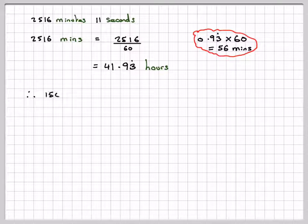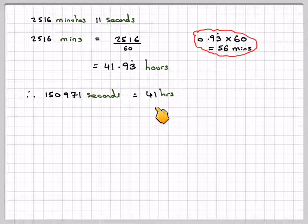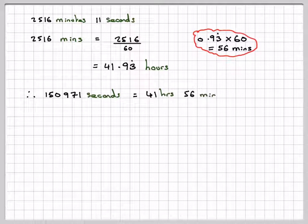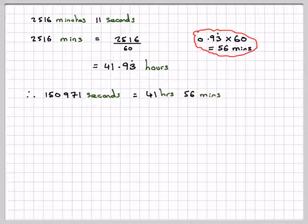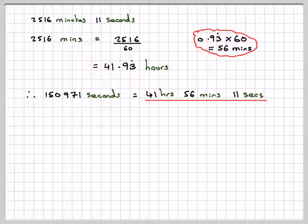So now I need to put this all together. 150,971 seconds is 41 hours, 56 minutes, and 11 seconds. Pause the video and rewind back to have a look again, because this little bit is quite tricky. Go through it again carefully so that you can understand what's happening there.